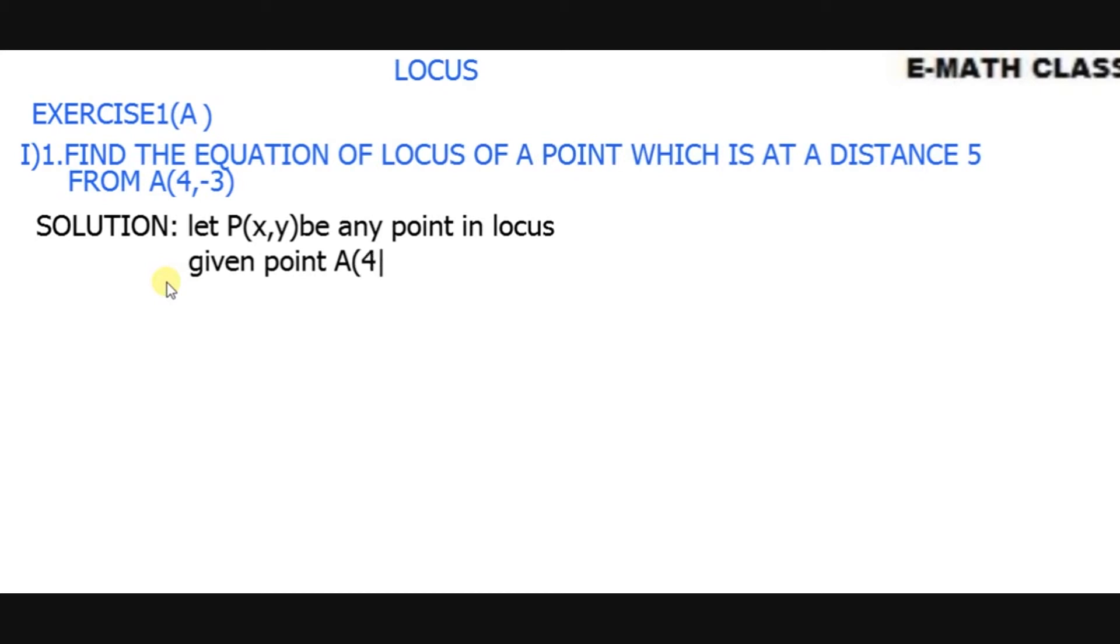Given point A(4, -3). The point is at a distance from this point. First step: Let P(x, y) be any point in locus.